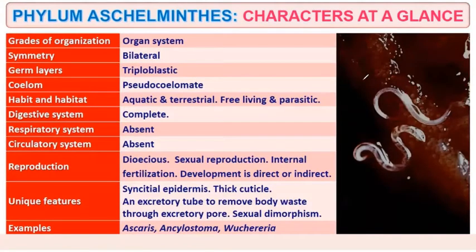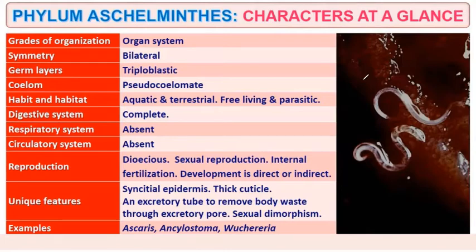Entire phylum at a glance: the organism shows organ-level system. Symmetry is bilateral. Germinal layer — they are triploblastic. They show the pseudocoelom. Organisms are aquatic or terrestrial, even free-living and parasitic. Type of digestive system is complete. Respiratory system is absent. Circulatory system is absent. They are dioecious. Sexual reproduction takes place with internal fertilization. Development is both direct as well as indirect.